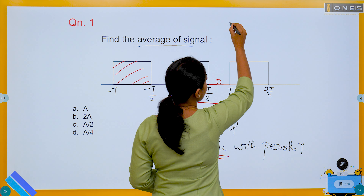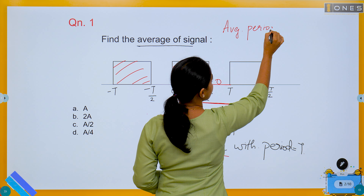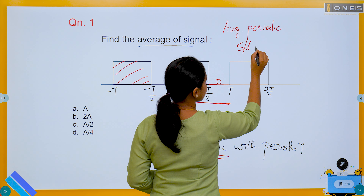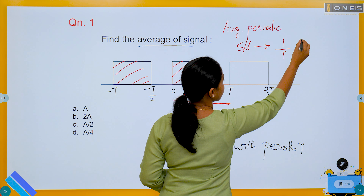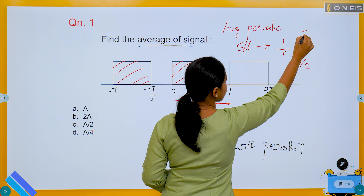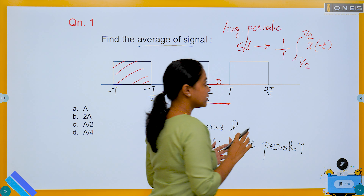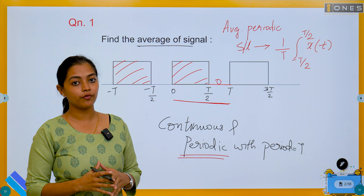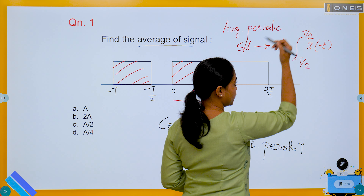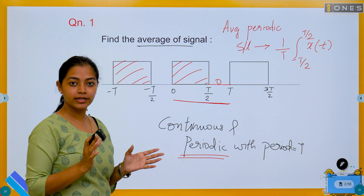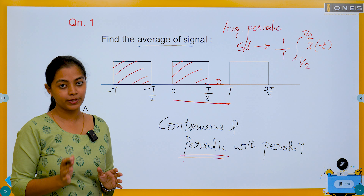We will use this equation. This is the formula to calculate the average of a periodic signal: (1/T) × integral from −T/2 to T/2 of x(t) dt. That is how we calculate average — this is the general equation for the average of a periodic signal.